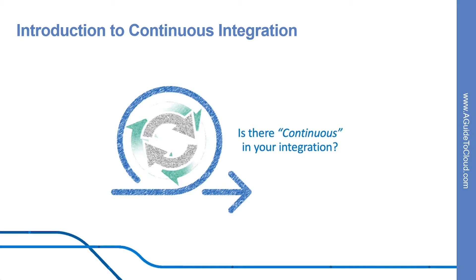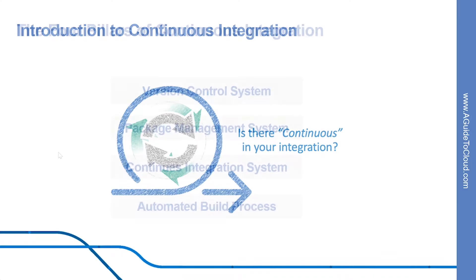The end goal of continuous integration is to make integration a simple, repeatable process that is part of everyday development workflow in order to reduce integration cost and respond to defects early. Working to make sure the system is robust, automated, and fast while cultivating a team culture that encourages frequent interaction and responsiveness to build issues is fundamental to the success of the strategy.